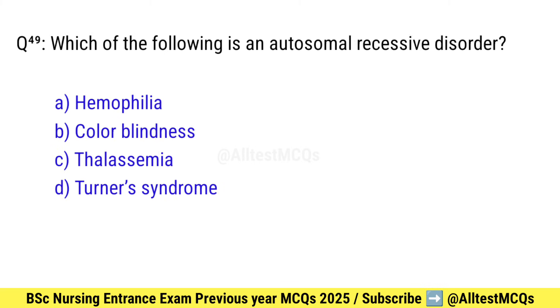Question number 49. Which of the following is an autosomal recessive disorder? Correct option is C: Thalassemia.